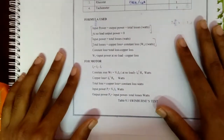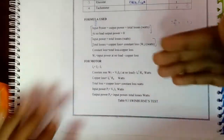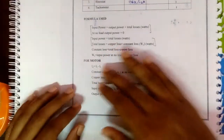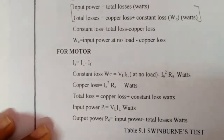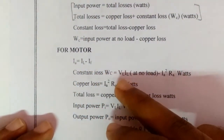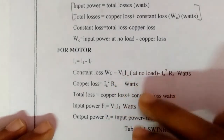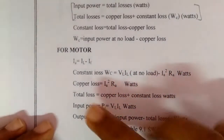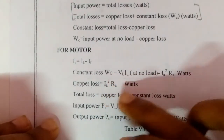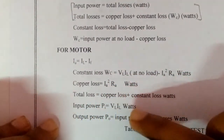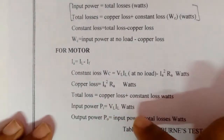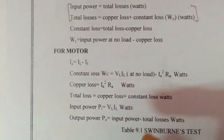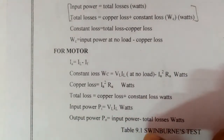Before moving to the tabular column, we should know some formulas used in this experiment. For a motor: armature current IA equals IL minus IF. Constant loss WC equals VL × IL at no load minus IA-squared × RA. Copper loss equals IA-squared × RA. Total loss equals copper loss plus constant loss in watts. Input power P equals VL × IL watts. Output power P0 equals input power minus total loss watts.